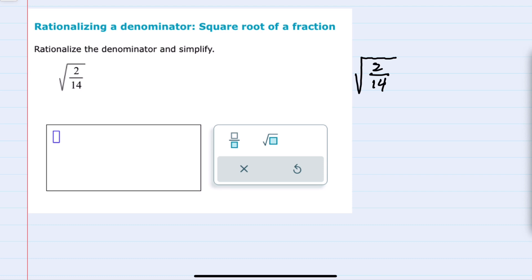But before we start getting rid of square roots in the denominator we can simplify this fraction because both the 2 and the 14 are divisible by 2. So just working under the radical, they're both divisible by 2. I can rewrite this as the square root where the numerator is 1 and the denominator is 7.